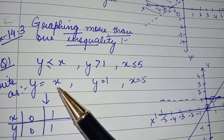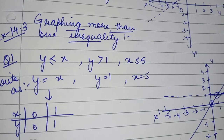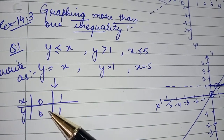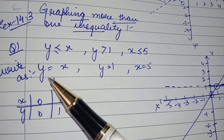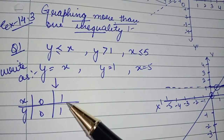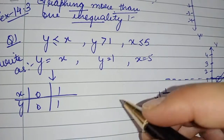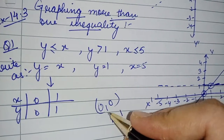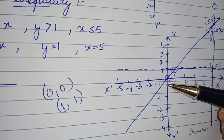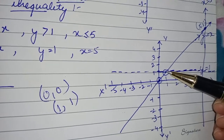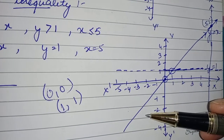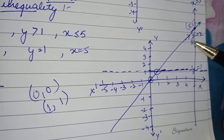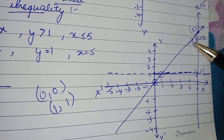I have to draw all three graphs. For y equal to x: when x is equal to 0, y is also equal to 0; when x is equal to 1, y is also equal to 1. So my two coordinates are (0, 0) and (1, 1). Draw the line through these — this is the line y equal to x.